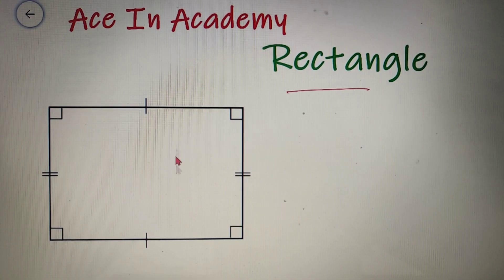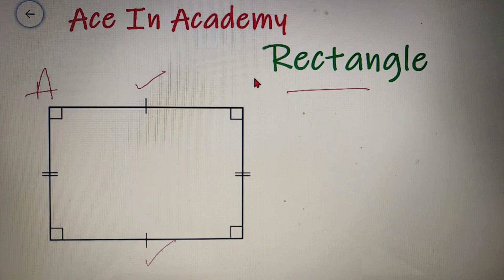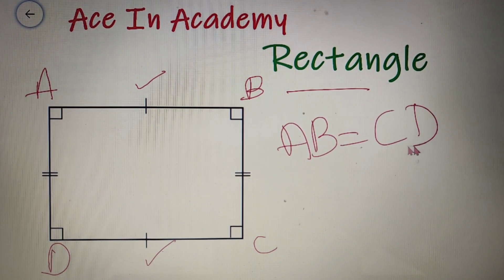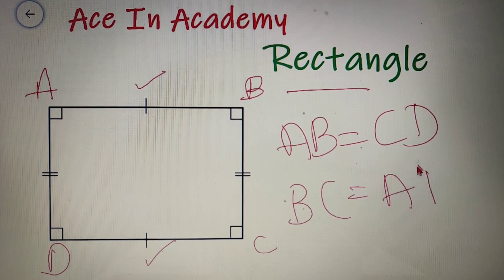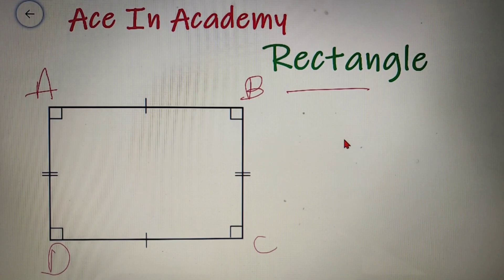A rectangle is one of the simplest quadrilaterals and its properties are as follows. The opposite sides of the rectangle are equal. If I name the vertices as A, B, C, and D respectively, then I can say that AB is equal to CD and BC is equal to AD. All the angles of a rectangle are equal and each angle is equal to 90 degrees.